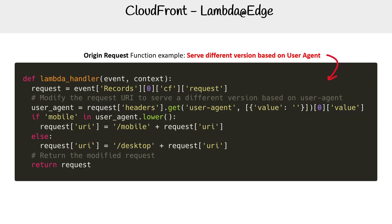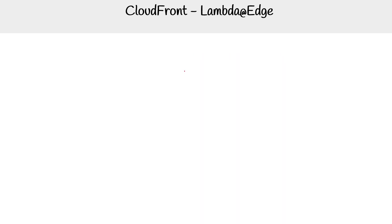Here we are modifying the origin request to serve different versions based on the user agent — this is actually very useful. We look at the request, get the user agent, and check if it's mobile. If it's mobile, we give the mobile URL; if not, it'll be the desktop.